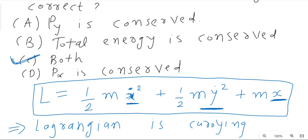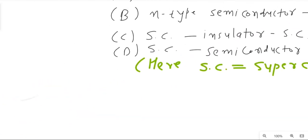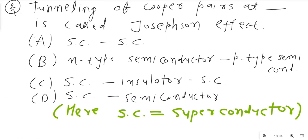To summarize the approach for such questions: if both x and x-dot are present in the Lagrangian, then px is not conserved. Since only y-dot is present (not y), py is conserved. And since the Lagrangian is time-independent, energy is conserved.